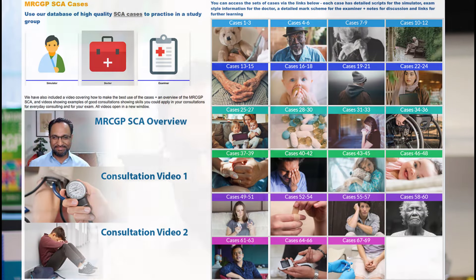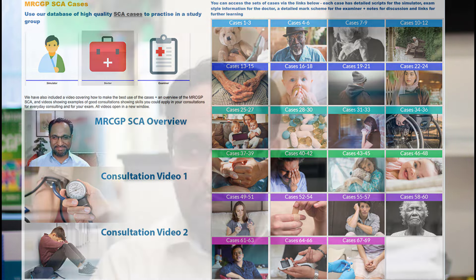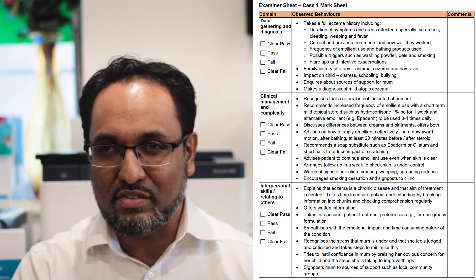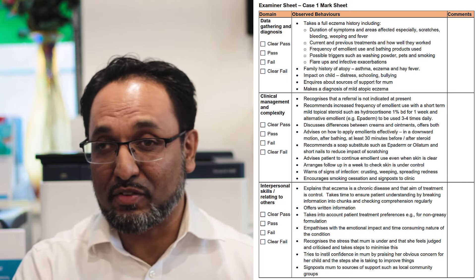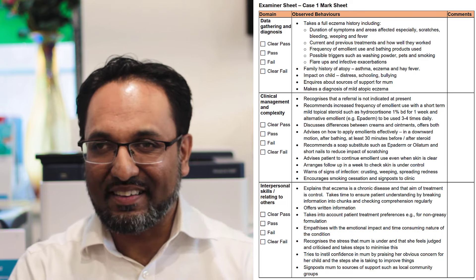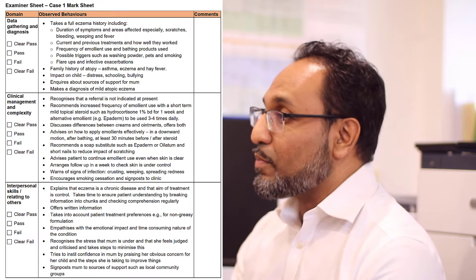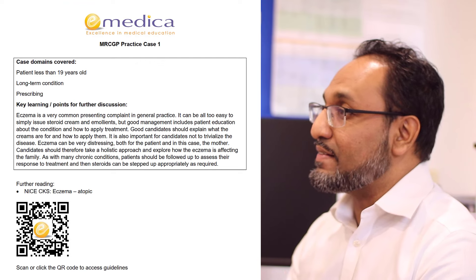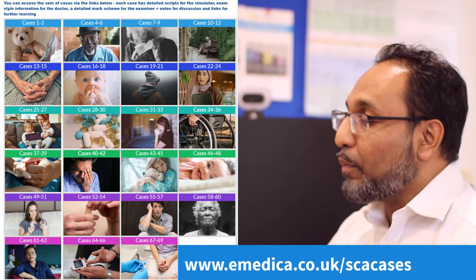If you want practice resources to help you prepare for your SCA, we have 69 detailed cases. Each one has a script for the role player in your group, a doctor sheet in the same format as the exam, and most importantly, a detailed mark scheme specific to each case — covering the specific things the examiner might look for in data gathering and diagnosis, key things to ask in the history, key red flags you absolutely mustn't miss, the right diagnosis, key things in clinical management and complexity based on current guidelines, and key things to think about for interpersonal skills and relating to others. There are also links for further reading and discussion so you can do your learning as you go.